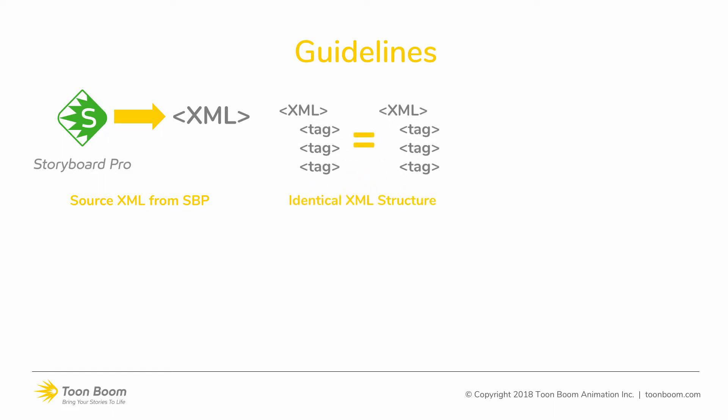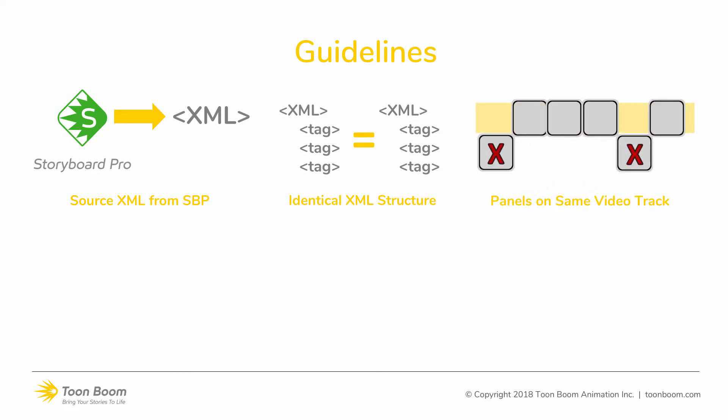Second, the structure of the composition — meaning the number of video tracks in order in Final Cut Pro or Premiere — needs to respect the same structure of the XML that came from Storyboard Pro in the first place. It's very important that all the clips representing the panel need to be on the same track. If not, when you conform back and you have panels on different video tracks, they will simply be ignored and only the one main track from your application will be imported back and conformed back in Storyboard Pro.